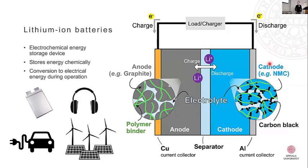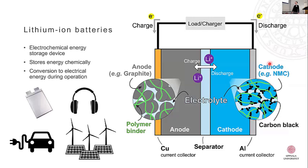Many of you will know how a lithium-ion battery works, but just for those who don't, a very brief introduction. A lithium-ion battery is an electrochemical energy storage device — it stores energy chemically and converts it to electrical energy during operation. It's really useful for portable electronic devices, electric vehicles, and also grid storage.